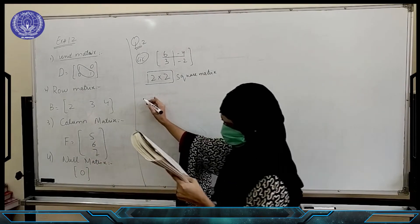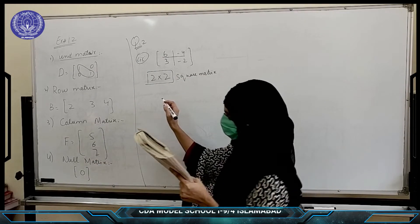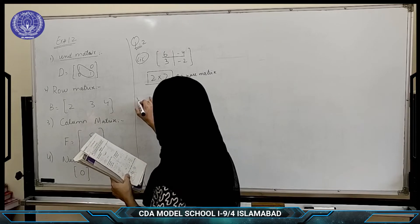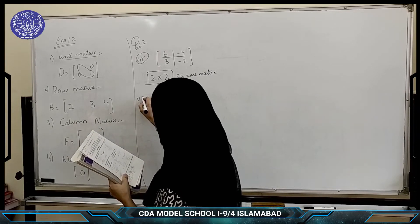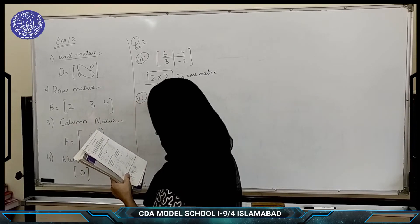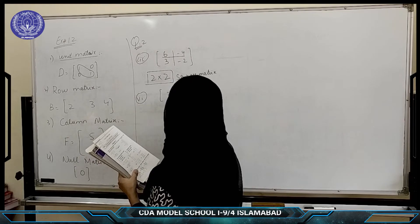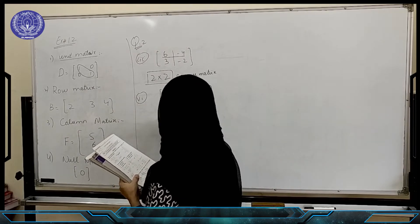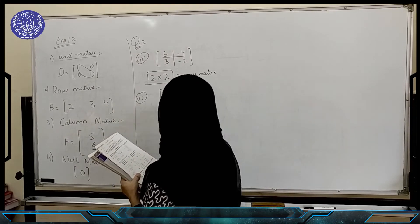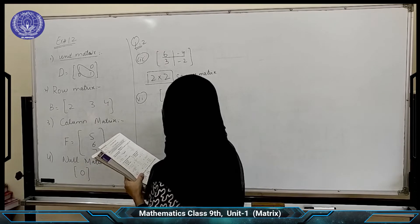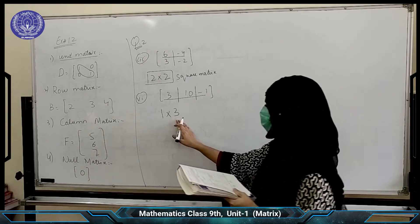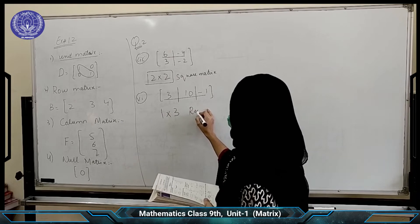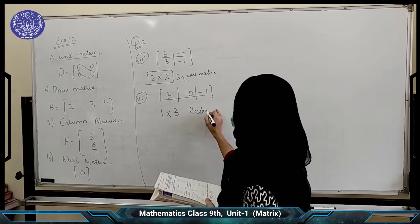And rectangular matrix — consider 3, 10, minus 1. The number of rows is 1, and the columns are 1, 2, and 3. Since the number of rows is not equal to the number of columns, it is said to be a rectangular matrix.